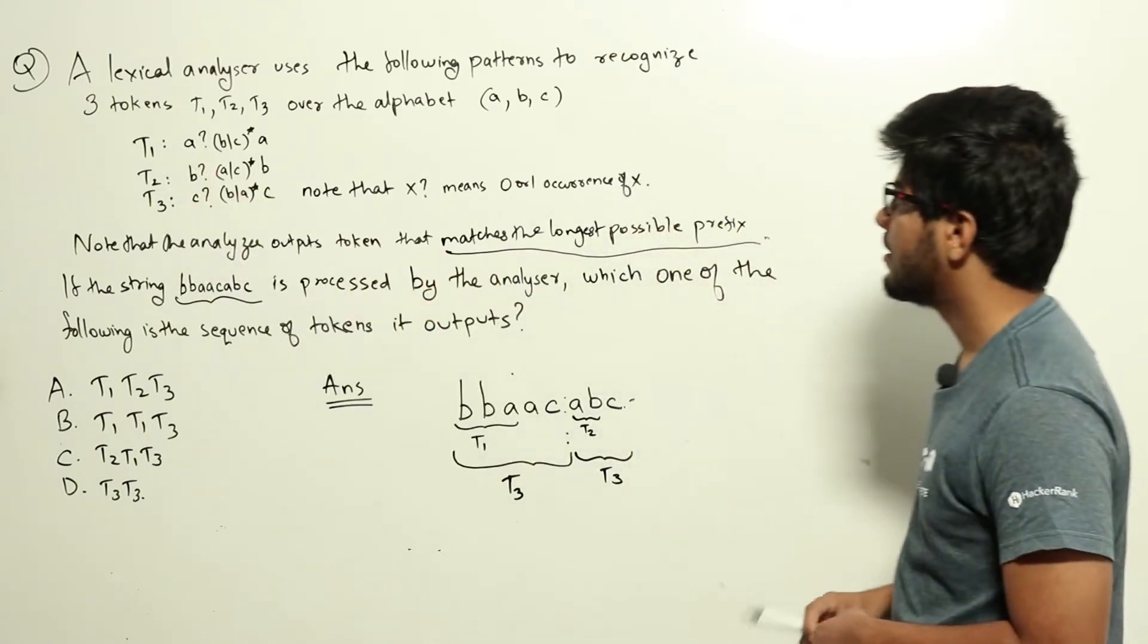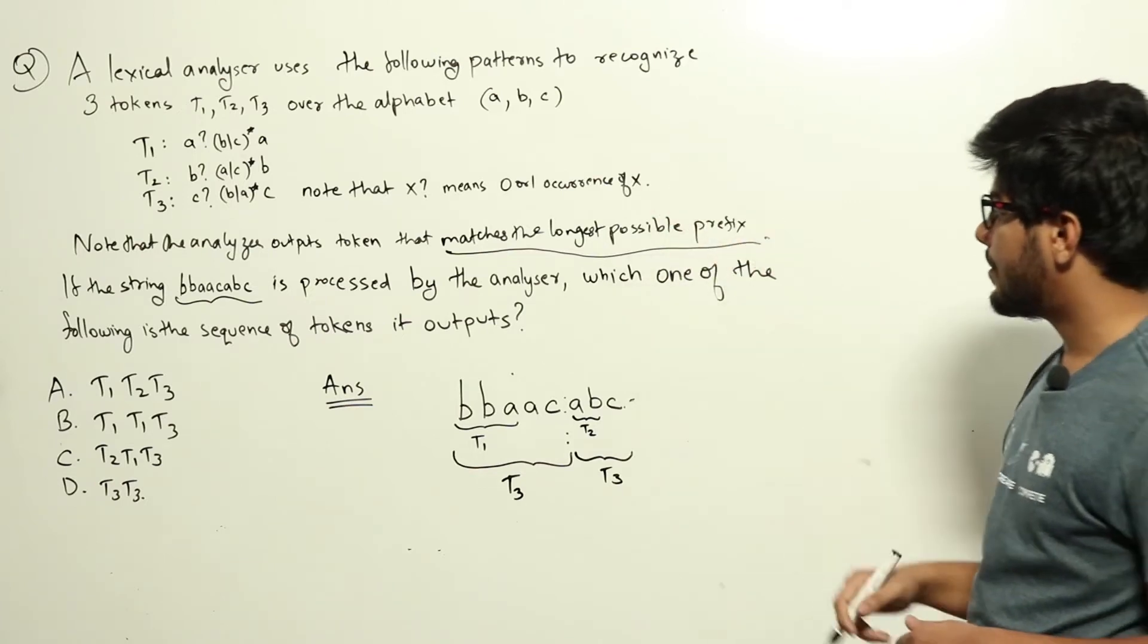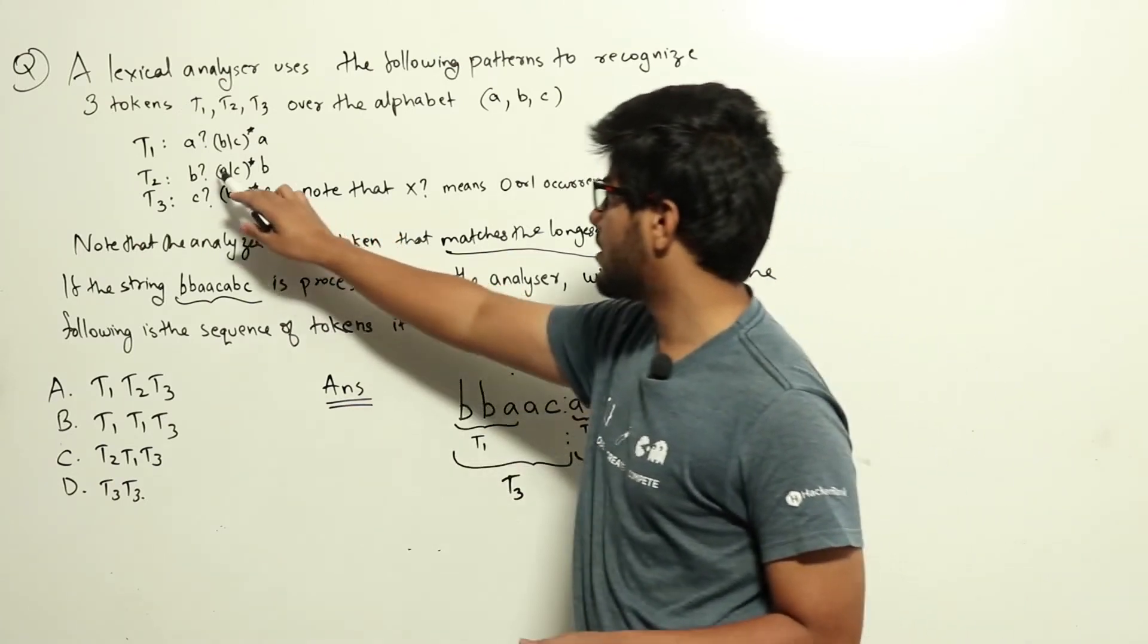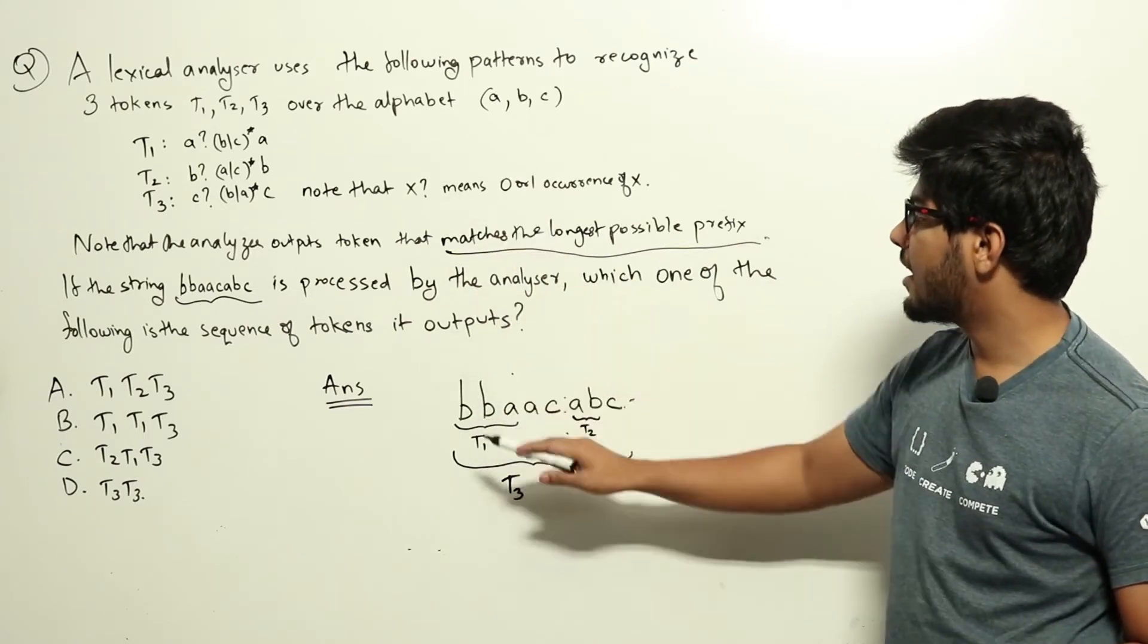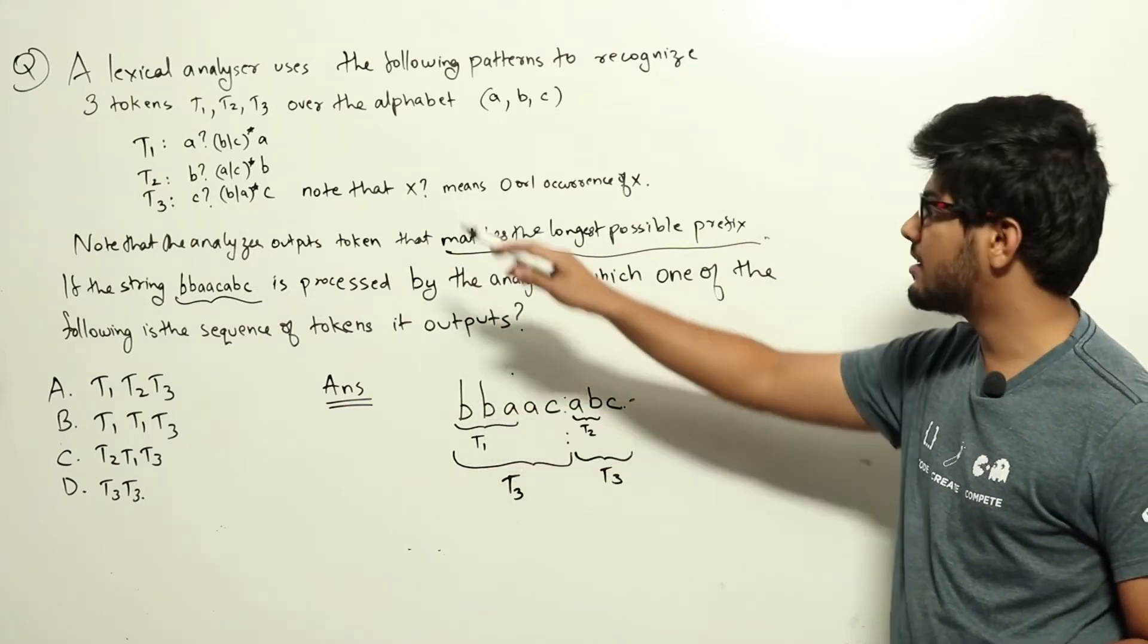Now let us see if T2 will match. It says zero or one occurrence of b, we will take one b, then it will be a or c, but the next one is b, so T2 can't be matched.